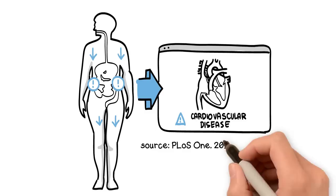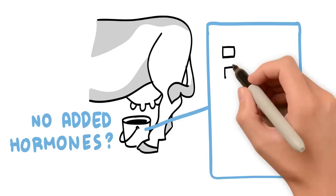What about cow's milk with no added hormones? Don't worry, there's plenty of natural hormones in there. Think estrogen, cortisol, and IGF-1.